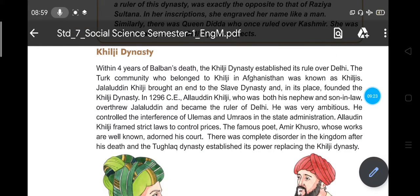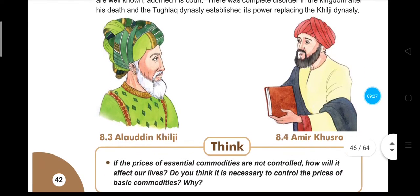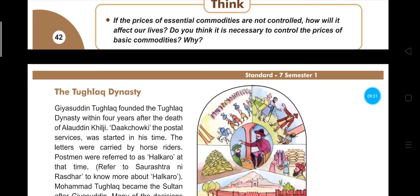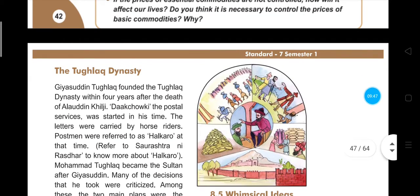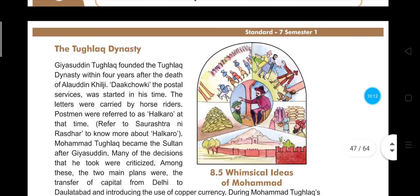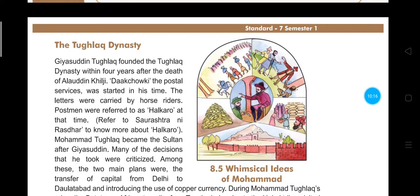Gyasuddin Tughlaq founded the Tughlaq dynasty within four years after the death of Alauddin Khilji, overthrowing the Khilji rule. He introduced postal services — letters were carried by horse riders, and postmen at that time were known as Halkaro. More information about Halkaro can be found in the magazine Saurashtra Nirasdhar.